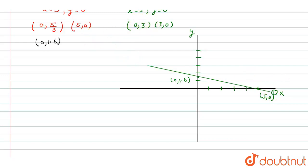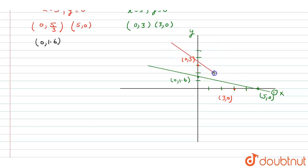For equation 2, we have points (0, 3) and (3, 0). We know these points on the graph. Now we draw a line passing through (0, 3) and (3, 0). This is the line for equation 2.